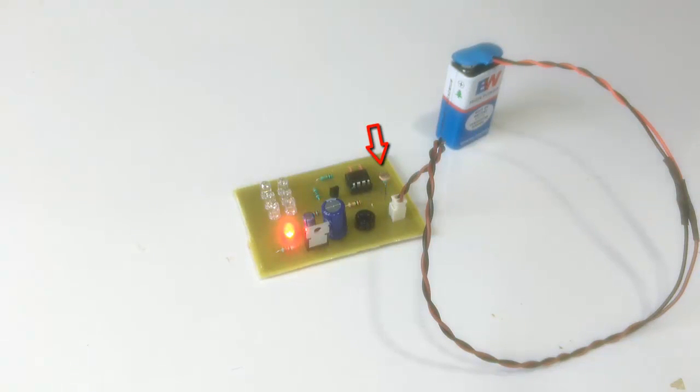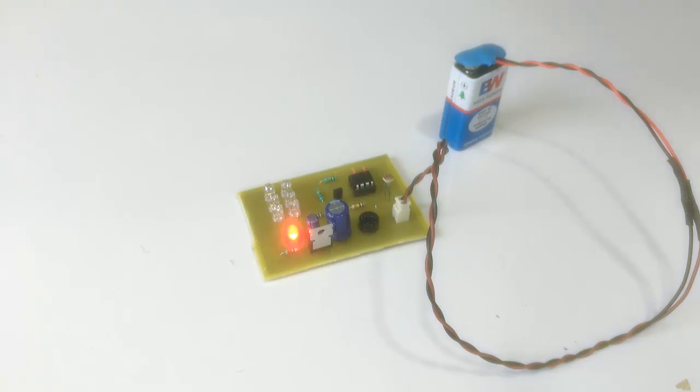The LDR senses ambient light in order to check if the current power supply is on or has gone off. So in case it doesn't detect too much ambient light, it instructs the 555 timer.